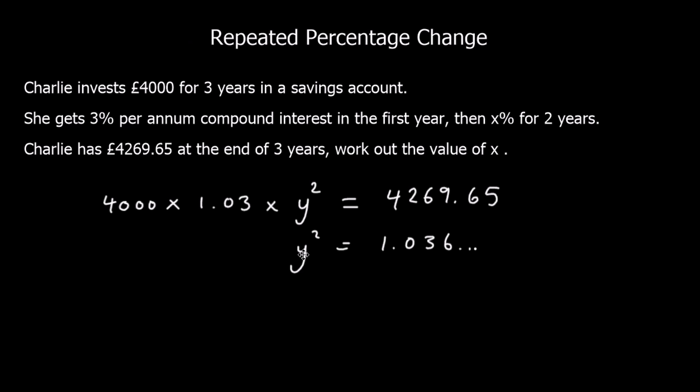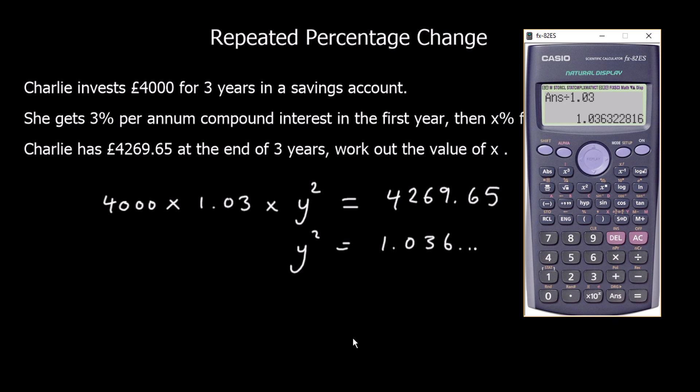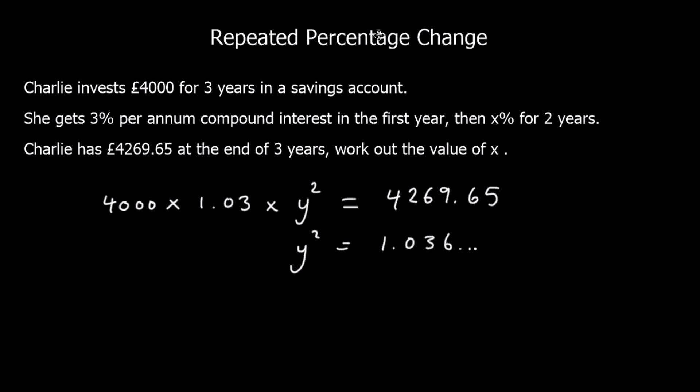And then to get Y by itself, I'm going to square root. So square root answer. And that leaves me with my multiplier, my Y value of 1.018.